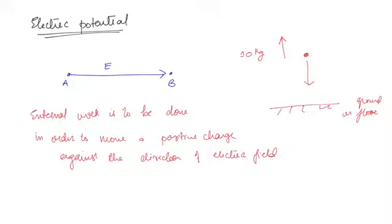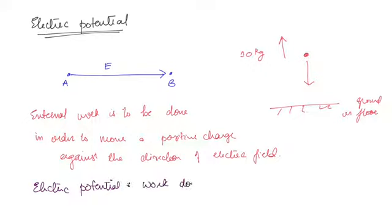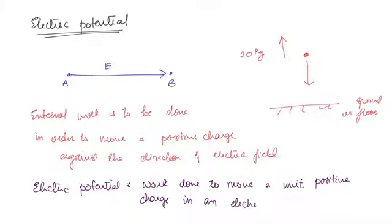Potential is related to this work. If you take a unit coulomb charge, the work done to move that unit coulomb charge against some electric field line is nothing but the electric potential. Electric potential is the work done to move a unit positive charge in an electric field.